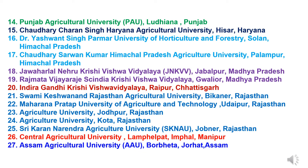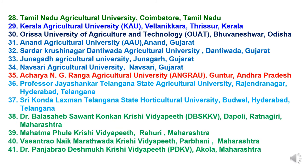Twenty-seventh is Assam Agriculture University, Jorhat, Assam. Twenty-eighth is Tamil Nadu Agriculture University, Coimbatore, Tamil Nadu. Twenty-ninth is Kerala Agriculture University, Vellanikkara, Thrissur, Kerala. Thirtieth is Odisha University of Agriculture and Technology, Bhubaneswar, Odisha. In Gujarat: Thirty-first is Anand Agriculture University, Anand, Gujarat. Thirty-second is Sardarkrushinagar Dantiwada Agriculture University, Dantiwada, Gujarat. Thirty-third is Junagadh Agriculture University, Junagadh, Gujarat. Thirty-fourth is Navsari Agriculture University, Navsari, Gujarat.